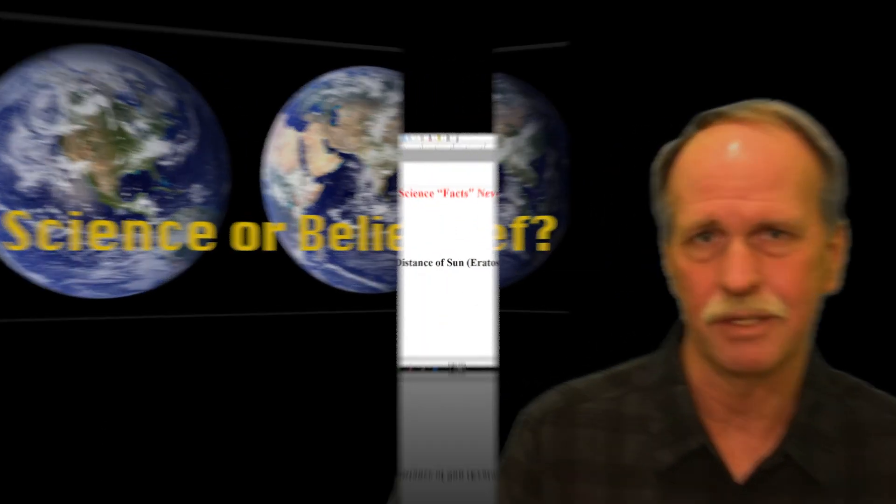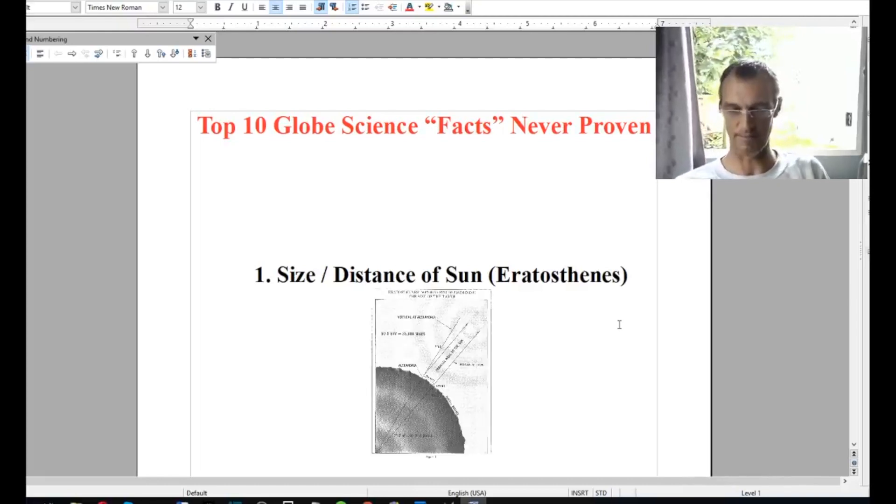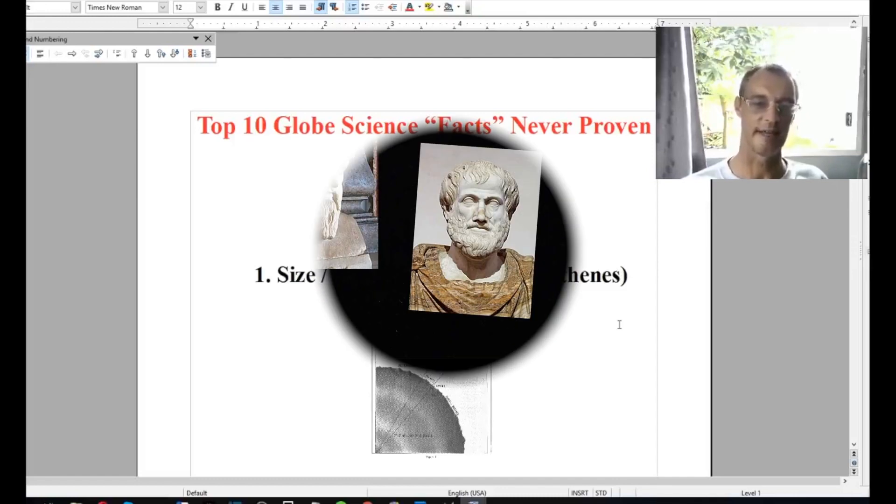So I hope you enjoy the series. So if you start looking into this, the first thing you'll probably find is pages and pages of the alleged first proof that we live on a globe, and that is the Eratosthenes experiment, which apparently determined the circumference of the Earth because of shadows measured on sticks and down a well.